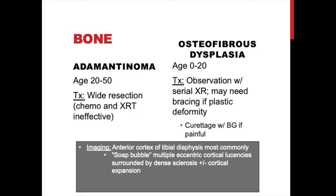We'll now compare two bone lesions — one malignant, one benign — because they closely mimic each other clinically and radiographically. The big hallmarks differentiating them are patient age and histology. These entities are adamantinoma (malignant) and osteofibrous dysplasia (benign). Adamantinoma is most commonly seen in middle-aged adults aged 20–50, whereas osteofibrous dysplasia is almost exclusively seen in patients under age 20. Treatment for adamantinoma is wide resection; chemotherapy and radiation are generally ineffective given its low-grade nature.